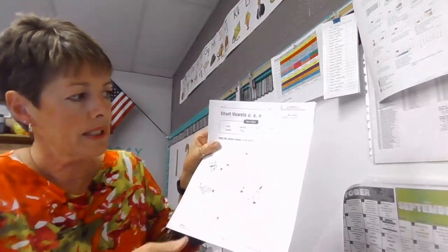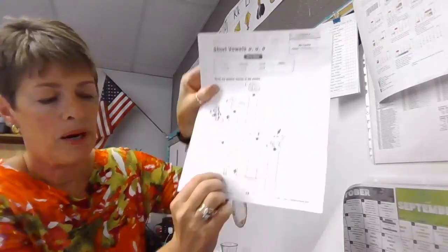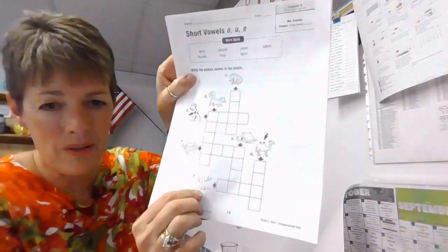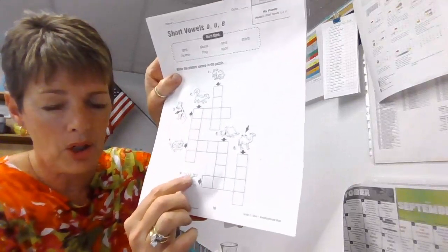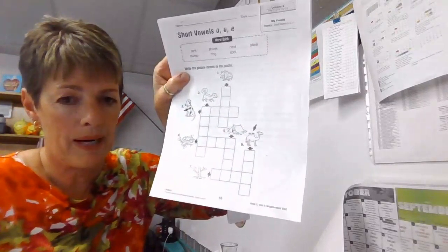And you're going to keep going all the way. The bottom one down here, number seven, is pointing to that tree, but it's not the tree. It's the part of the tree. What is that part called? And you're going to put that word in those boxes.